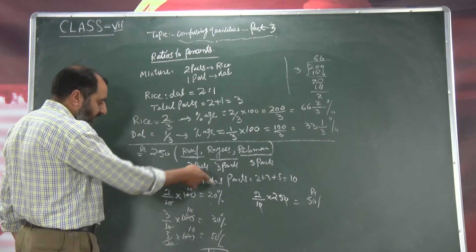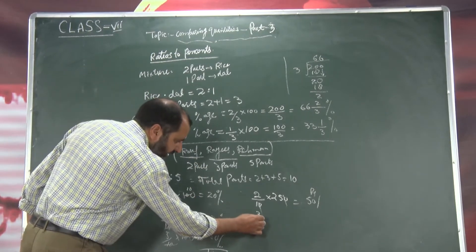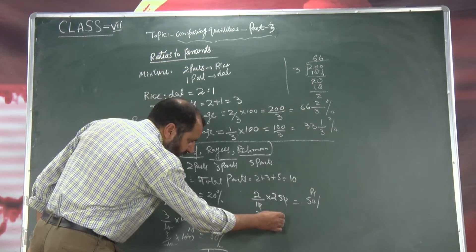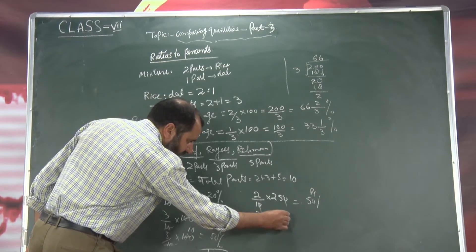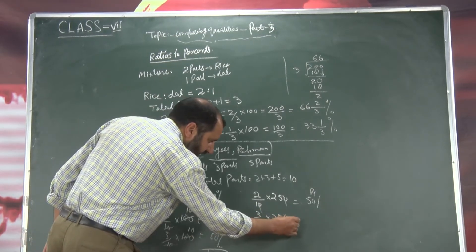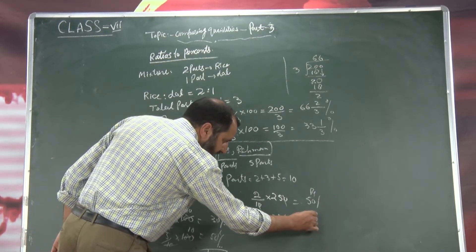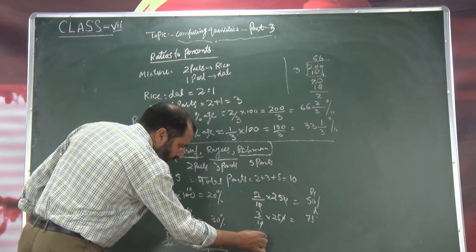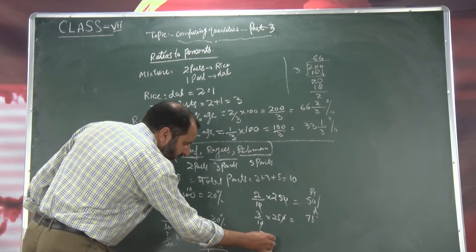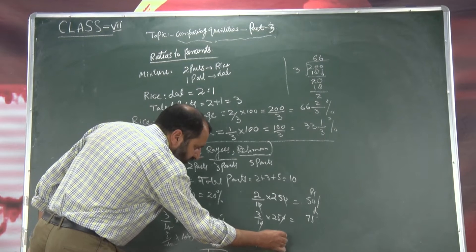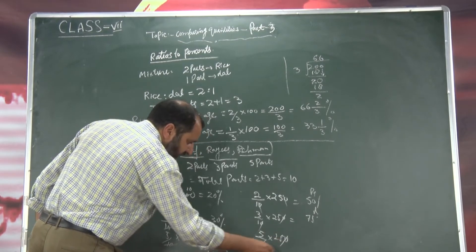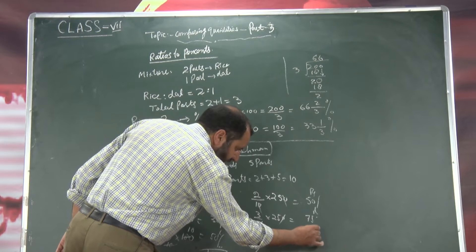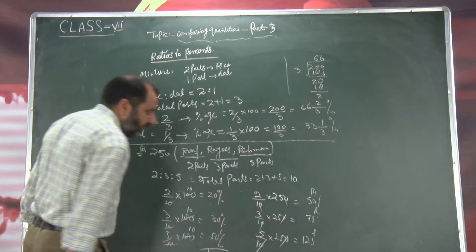Ab yahaan dekhe — Rais kitna lieta hai, three parts. It means three divide by 10, kitney mein se three parts leta hai two hundred fifty mein se. To zero and zero gets cancel, twenty five into three ho gaya seventy five. To seventy five Rais leta hai. Ab five parts leta hai Rahman — five divide by ten into two hundred fifty. Zero and zero gets cancel, twenty five into five ho gaya one hundred twenty five.